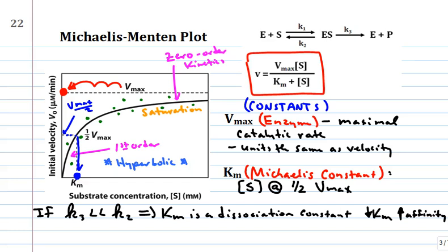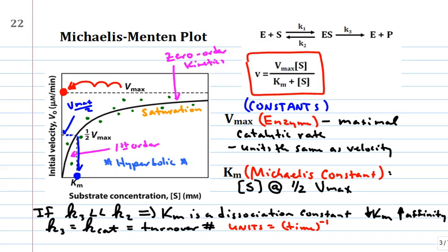Before we leave this plot: k3, which we call kcat, is the catalytic rate constant, also called the turnover number — the number of times an enzyme does its job per unit time. It has units of inverse time. So kcat tells you how many times an enzyme turns over — goes from substrate to product — in a given amount of time.